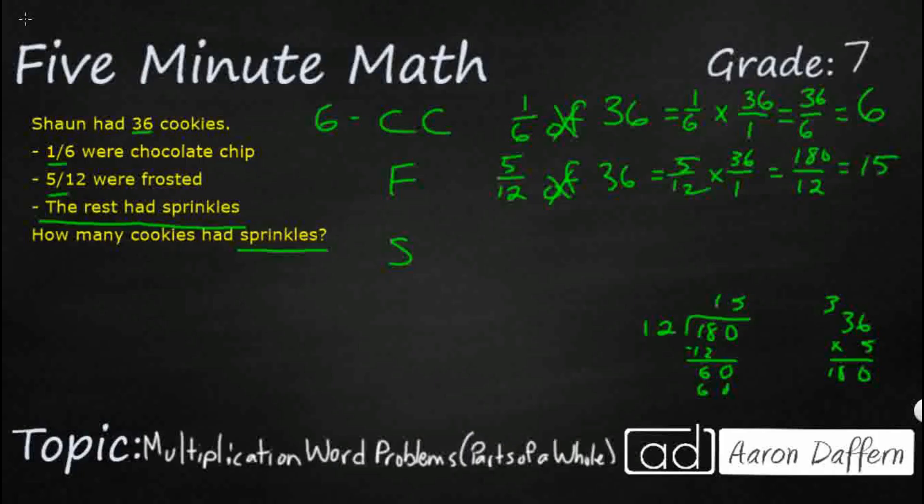So if I add these two up, I've got 6 and I've got 15. So add these two up, and I'm going to get 21. Well, if 21 cookies are already taken and the rest are sprinkles, then I just need to do my 36 minus my 21, because remember my 36 is my total, and that is going to give me an answer of 15.